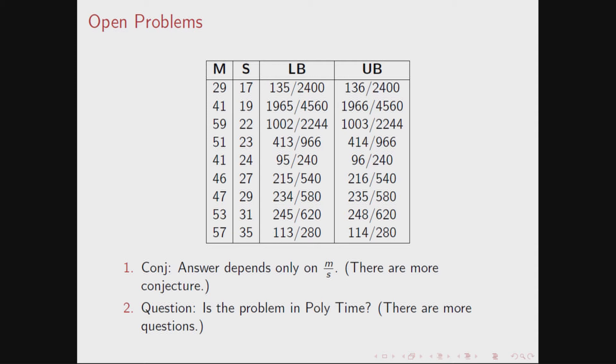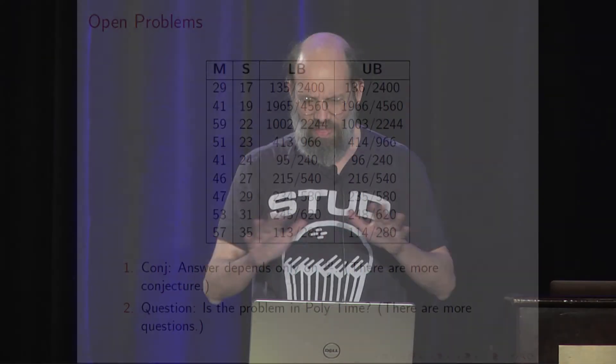Some conjectures: we believe the answer depends only on M over S, the ratio muffins to students. There are some more conjectures. And a question: is the problem itself in polytime? You can do it with a mixed-int program, but the program itself is very large compared to the input, so that's not really an answer. And again, there are more open questions.